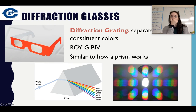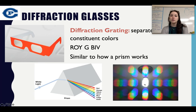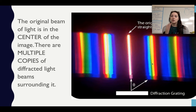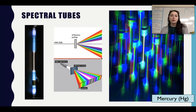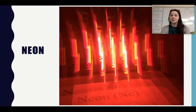Diffraction glasses separate the constituent colors of what we see — we get ROYGBIV. Think about how a prism works: white light comes in and you see all the colors. If I look at a white bulb I just see white light, but with diffraction grating I see all the colors. The original beam is always in the center of the image and the multiple copies of diffracted light surround it. That's what we completed in lab using our spectral tubes — we took pictures of them. There's a video on Canvas and on YouTube you can use as a reference.